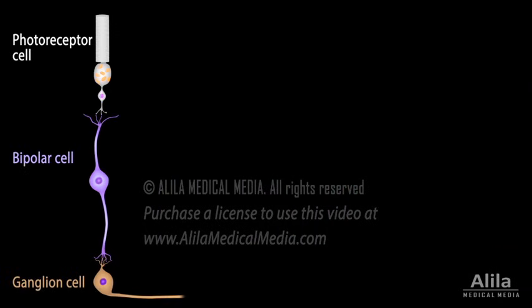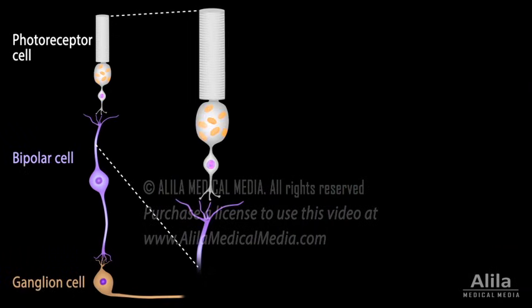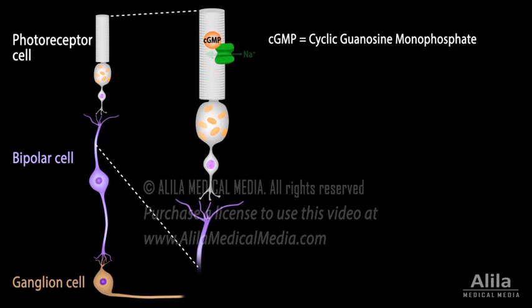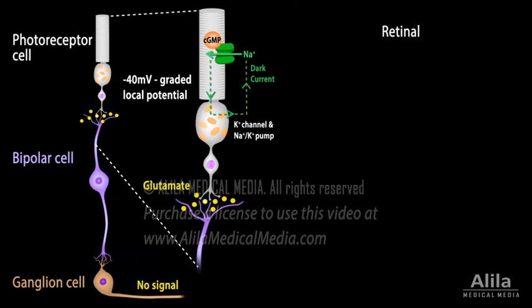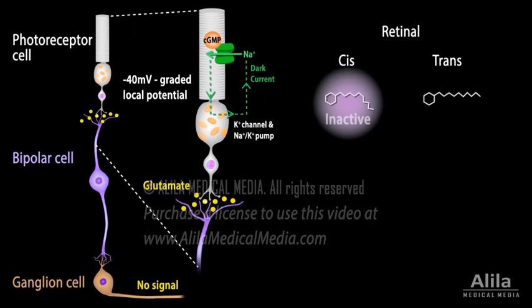In the dark, there is a so-called dark current in photoreceptor cells. This is due to the presence of cGMP, which permits a constant influx of sodium. The cells are depolarized and release the neurotransmitter glutamate at the synapse with bipolar cells. The retinal exists in two conformations — cis and trans. In the dark, the cis form is bound to opsin, keeping it inactive.